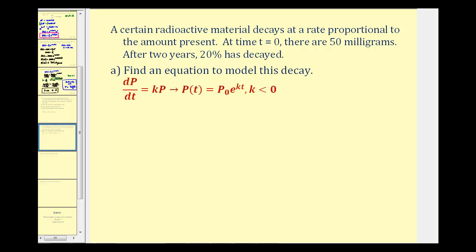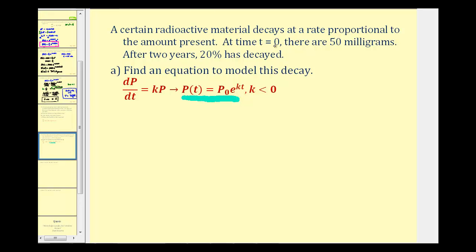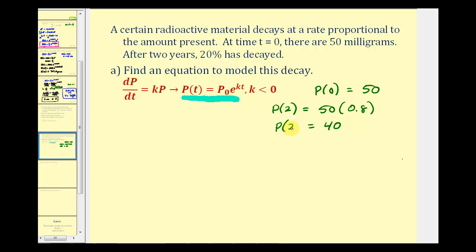Let's start with part A by finding the equation that would model this decay. We know at time t equals zero, there are 50 milligrams of material, so p of zero equals 50. After two years, 20 percent has decayed. This does not mean k equals negative 0.2. That means p of two is going to be 20 percent less than 50 — so 80 percent would remain, giving us 50 times 0.8, which is 40 milligrams. So p of two equals 40 milligrams.